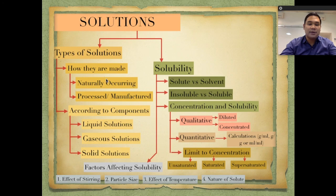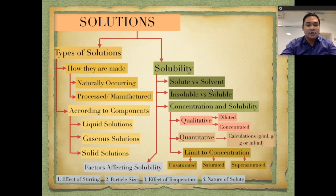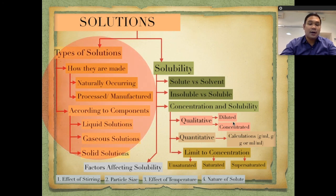In summary, we discussed types of solutions classified based on how they are made — naturally occurring and manufactured — and also according to their components: liquid, gaseous, and solid solutions. We also discussed solute, which is usually present in smaller amount, and solvent, which is usually present in larger amount. On the next video, we will discuss soluble versus insoluble and the terms diluted and concentrated.